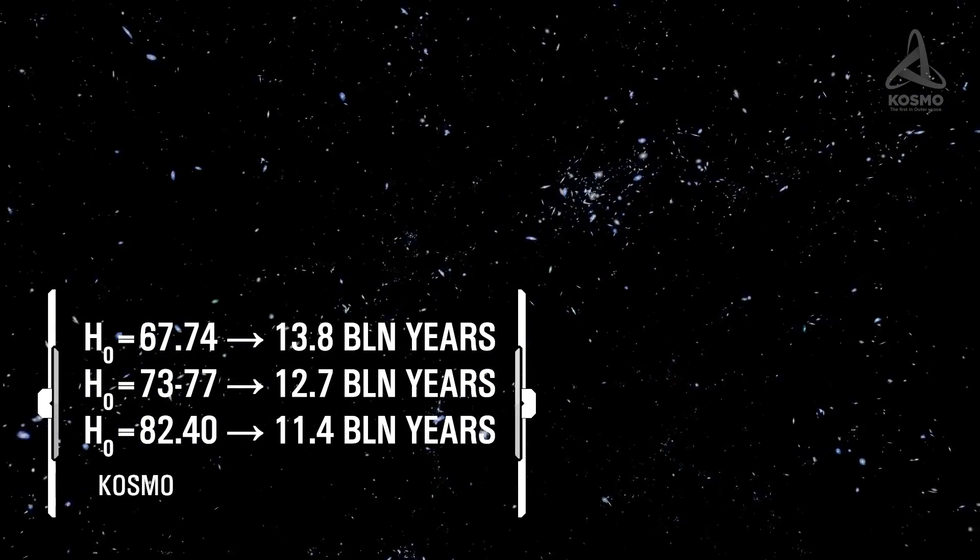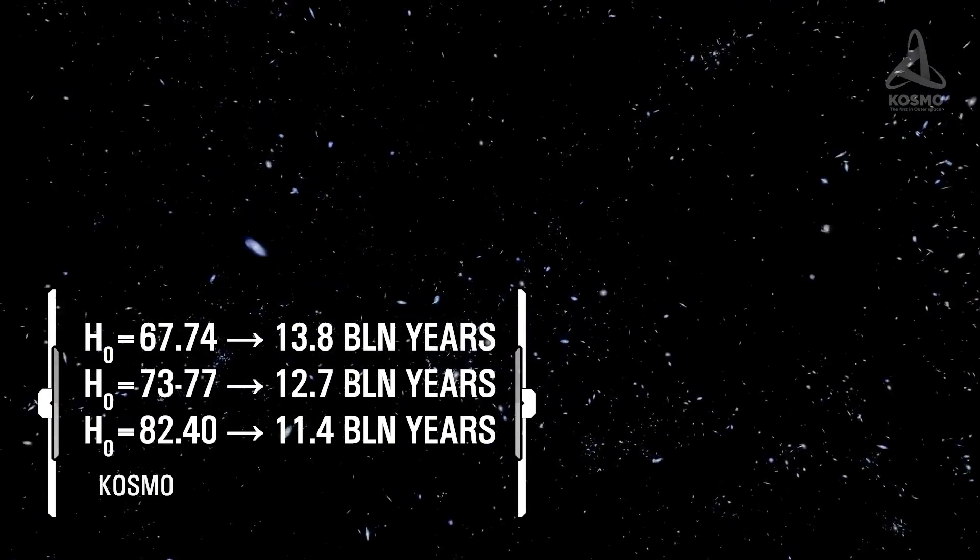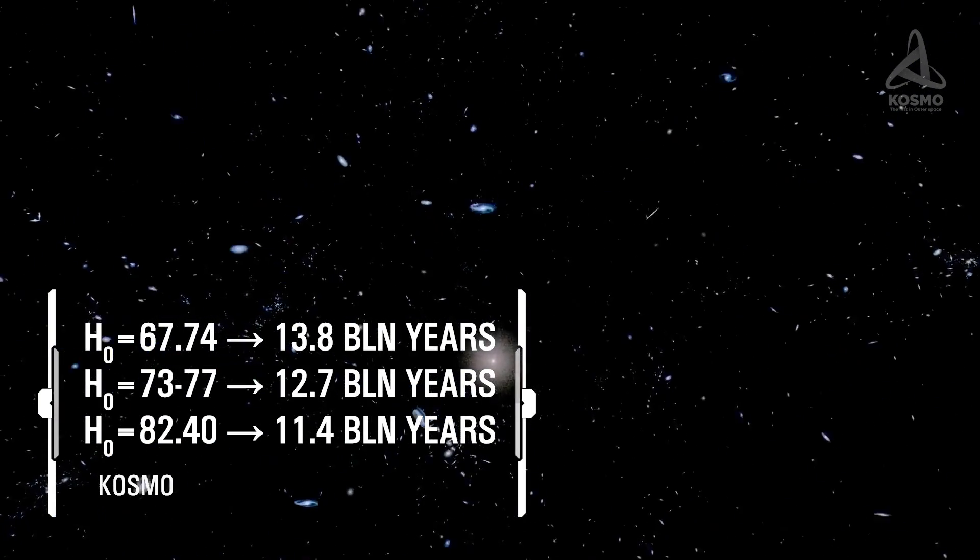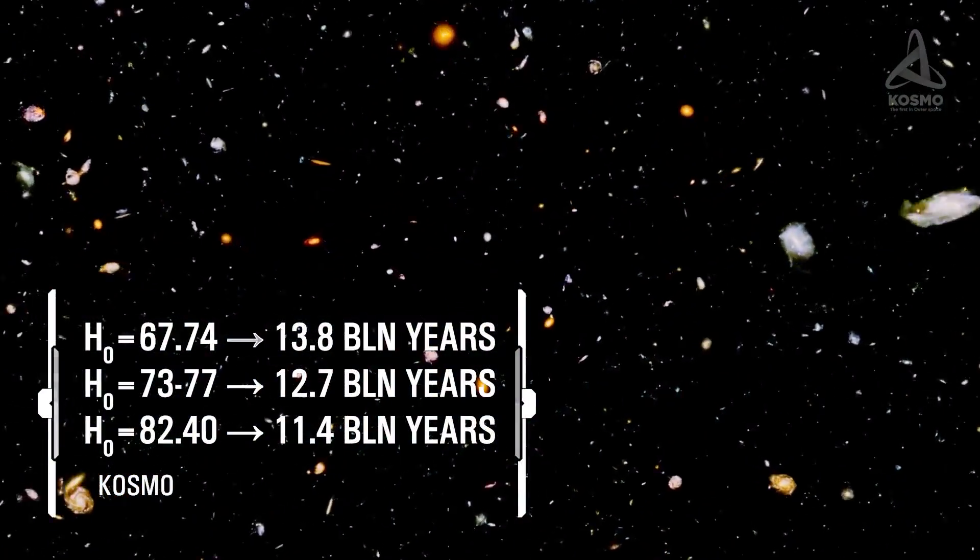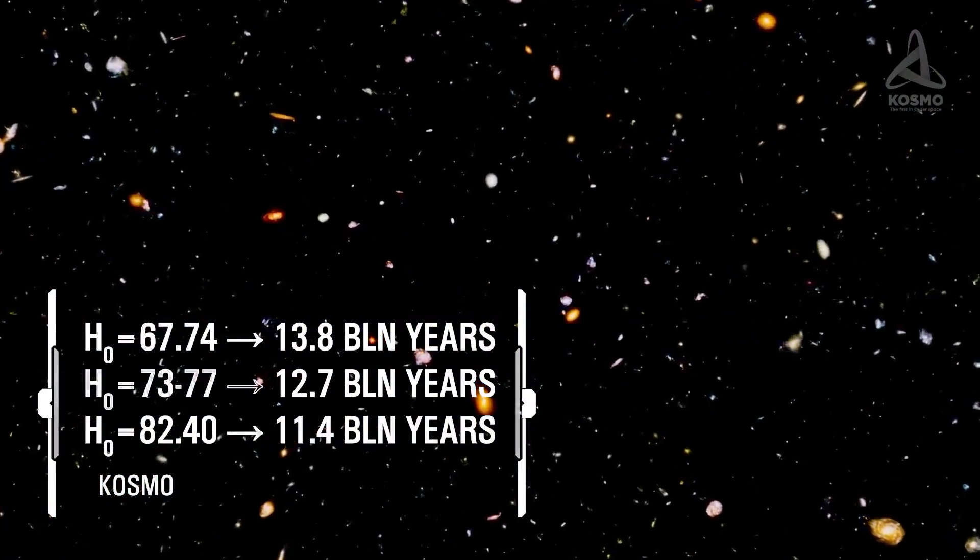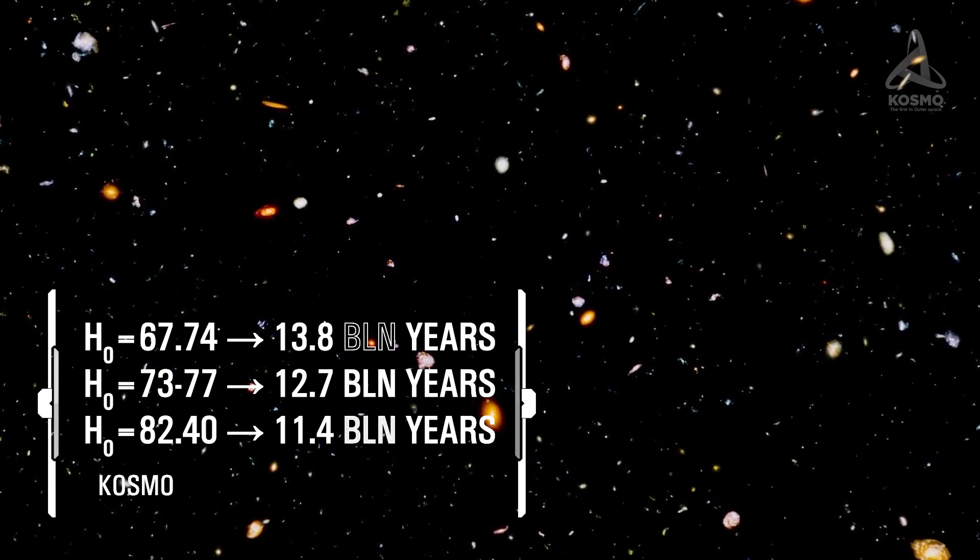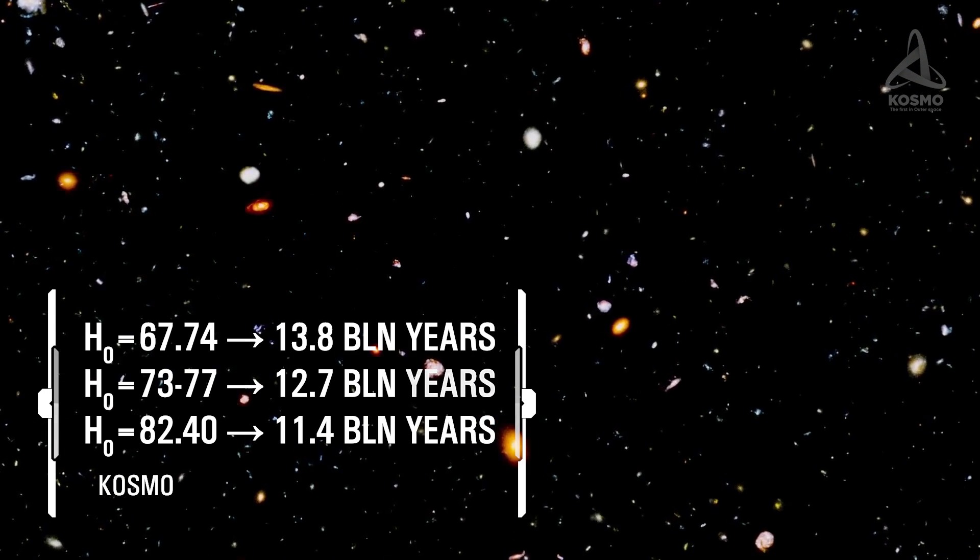Quite recently, a study was published in the Science magazine which claims the Hubble constant to be 82.4. It should be mentioned it's a well-reputed magazine. The 82.4 constant corresponds to the age of 11.4 billion years.